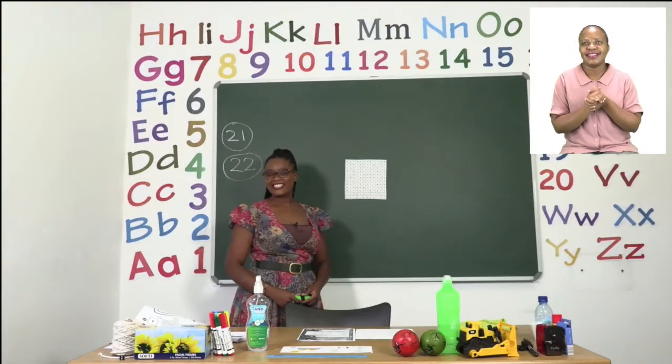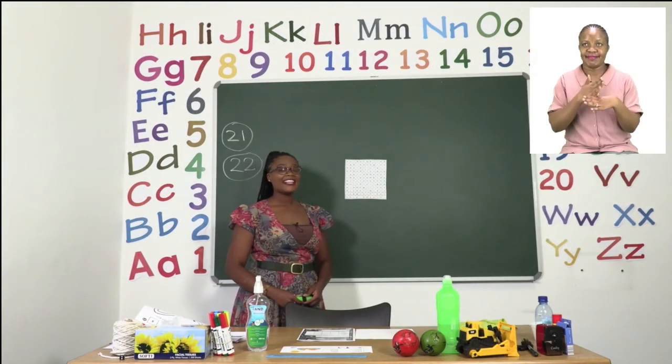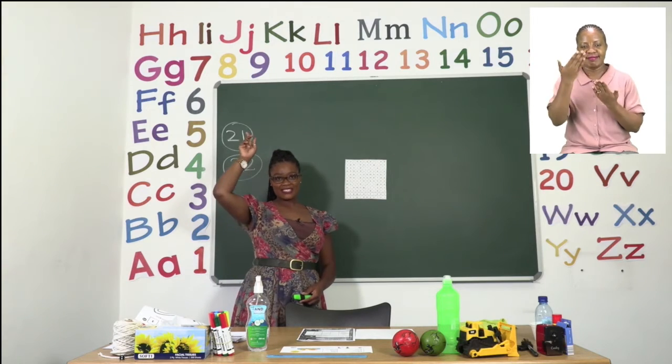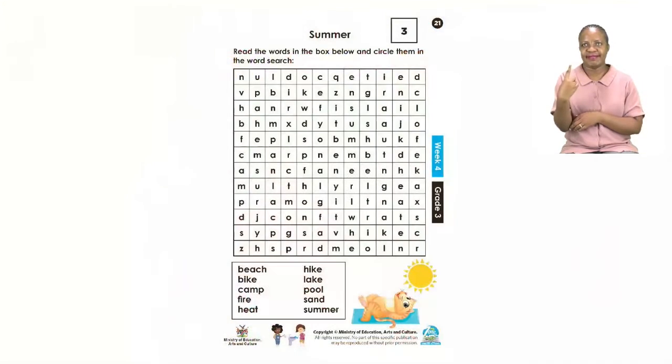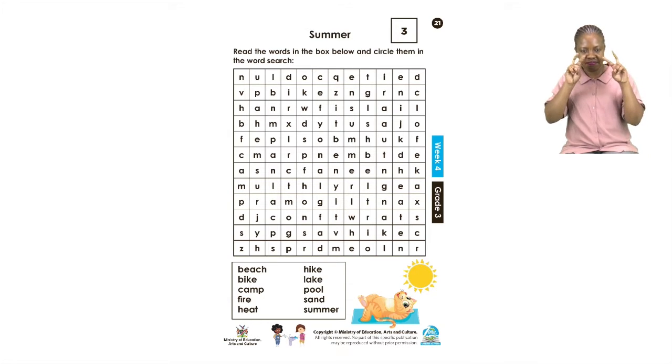For our first exercise for today, boys and girls, let us turn to page 21. On page 21, we have a word search. And it is all about summer and it is going to be our job to read the words in the box below and then look for them in the word search. So let us read the words in the box below.